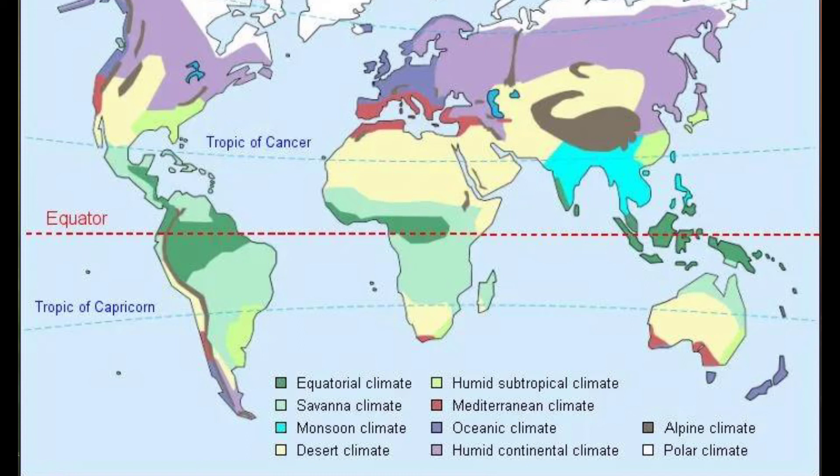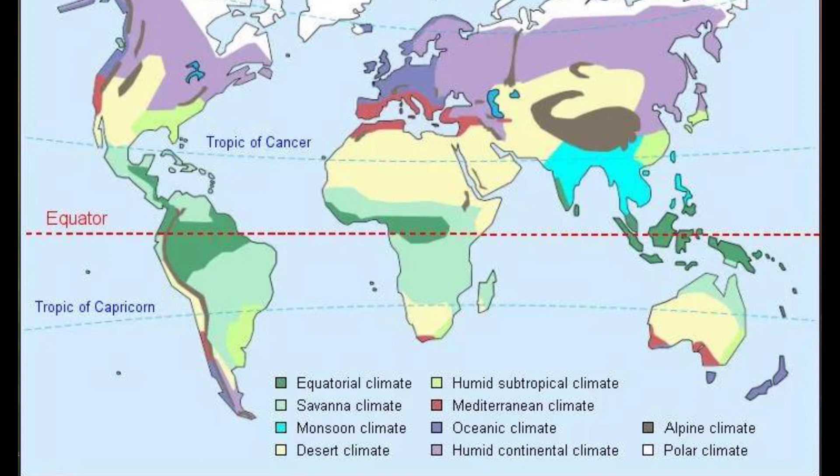So, these are some of the major natural regions of the world. We will discuss about each of these natural regions in detail, one by one. For today, I am stopping here. In the next class, we will discuss these natural regions one by one. Thank you.